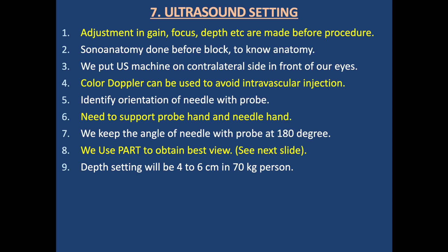Ultrasound setting: We need to adjust gain, focus, and depth before the procedure. Sonoanatomy is done before the block to understand the anatomy. We put the ultrasound machine on the contralateral side in front of our eyes. Color Doppler can be used to avoid intravascular injection. We identify the orientation of the needle with the probe, support both the probe hand and the needle hand, and keep the angle of needle with probe at 180 degrees, which is very beneficial in this block. We use probe maneuvers to obtain the best view.